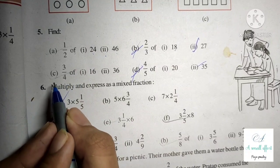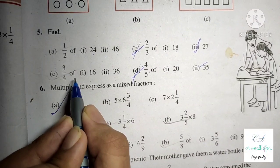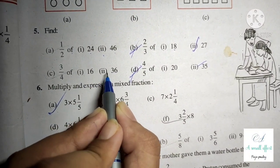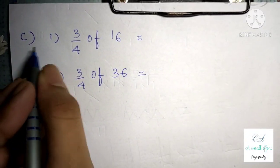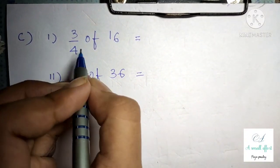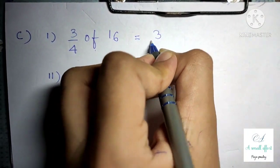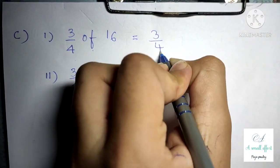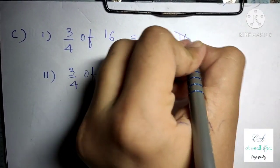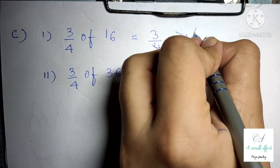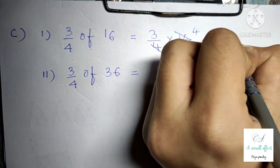Question number 5 bit C: part 1 is 3 by 4 of 16, part 2 is 3 by 4 of 36. First part: we write 3 by 4 into 16. In the 4 times table, 16 comes 4 times, so 4 threes are 12.